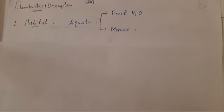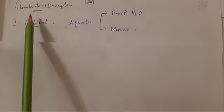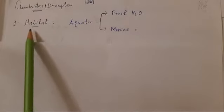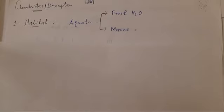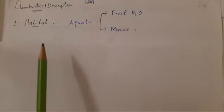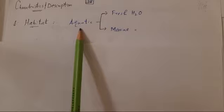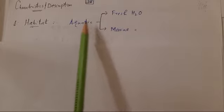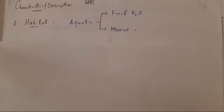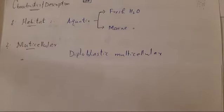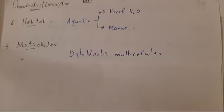Now we will study the characteristics of Phylum Coelentrata. First, habitat: all members of Phylum Coelentrata or Cnidaria are aquatic, meaning they live in water — both freshwater and marine water. Number two, they are multicellular and diploblastic, meaning their body wall is composed of two layers of cells: the outer layer called ectoderm and the inner layer called endoderm.